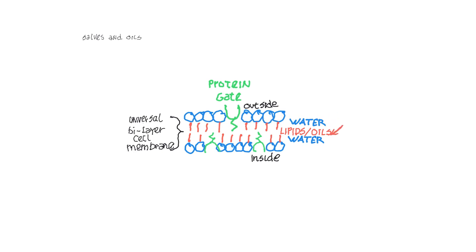Micelles naturally unite at the molecular level so that the water-soluble parts connect up and the oil-soluble parts connect up. They form a universal bilayer cell membrane with a membrane on the inside and on the outside. The outside of the membrane is water-soluble and the inside is oil-soluble. The single layers form the phospholipid bilayers, which are the universal form of all cell membranes.